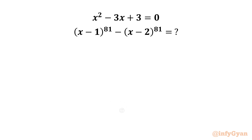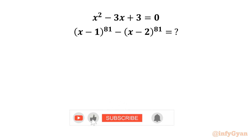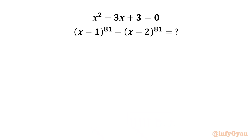Hello friends, welcome back to Infigyan. Today in this video we have another very interesting and challenging question from algebra. We are going to evaluate the expression (x-1)^81 - (x-2)^81, given that x² - 3x + 3 = 0.